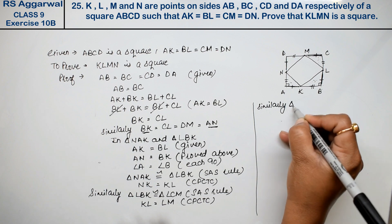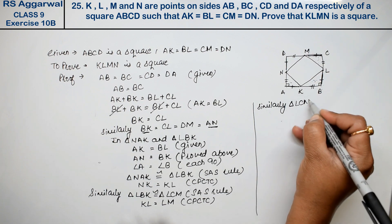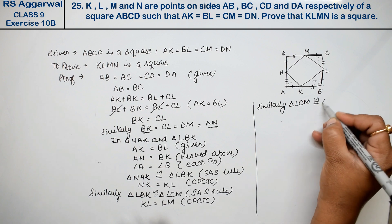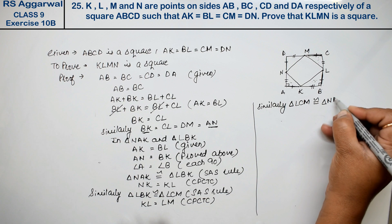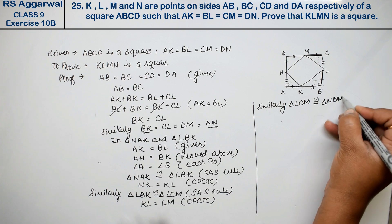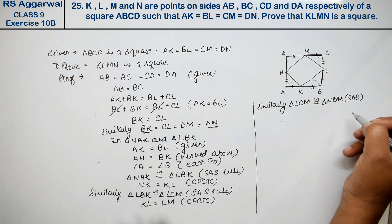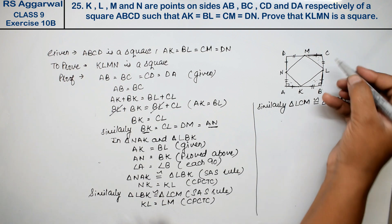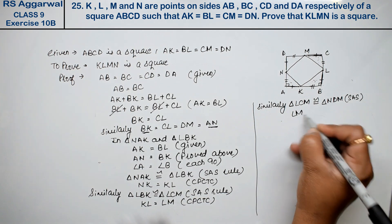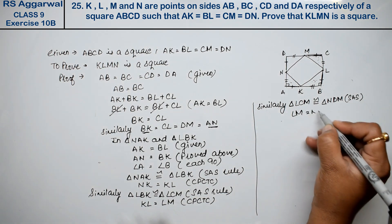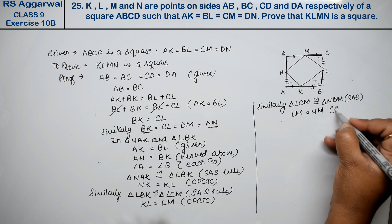Similarly, triangle LCM is congruent to triangle NDM by SAS rule. Right friends. When these two triangles are congruent, then LM equals NM by CPCTC.